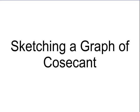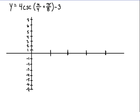Let's take a look at sketching the graph of a cosecant function. We're given the equation y equals 4 times the cosecant of x over 4 plus pi over 8, all minus 3. Let's remember that cosecant is just the reciprocal function of sine, so let's get started by graphing a sine function that has the same transformations, ignoring the phase shift at first.